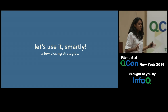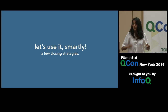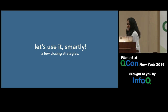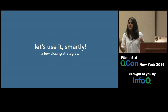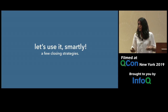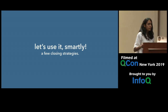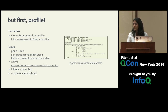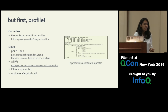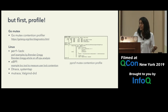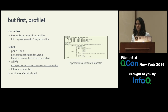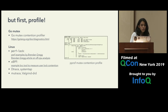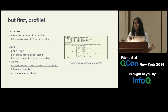Now let's touch upon smart strategies to reduce contention. First, profile. Locks might not even be the problem — so profile your application first. In Go, you can use the Go mutex contention profiler. On Linux, you can use prof-lock, write an eBPF script, use dtrace or systemtap. First profile.